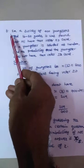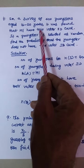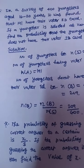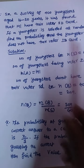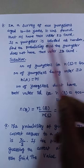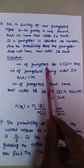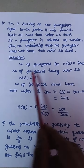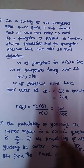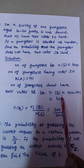Next problem: In a survey of 400 youngsters aged 16 to 20 years, it was found that 191 have their voter ID card. If a youngster is selected at random, find the probability that the youngster does not have the voter ID card. N of S equals 400. Number of youngsters having voter ID, N of A, equals 191. Number of youngsters who don't have voter ID, N of B, equals 400 minus 191, which equals 209.